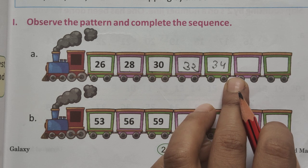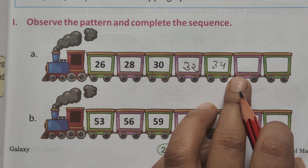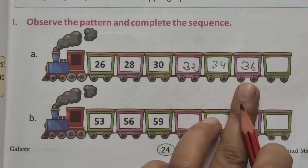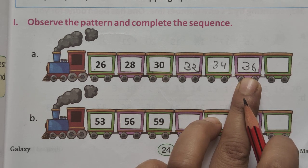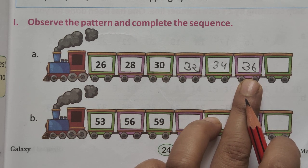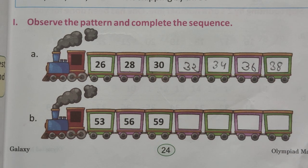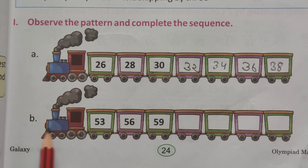34, after that, by two skip count, 35 and 36. 36, after that, by two skips, count the number, 37 and 38. Is that clear, all of you?